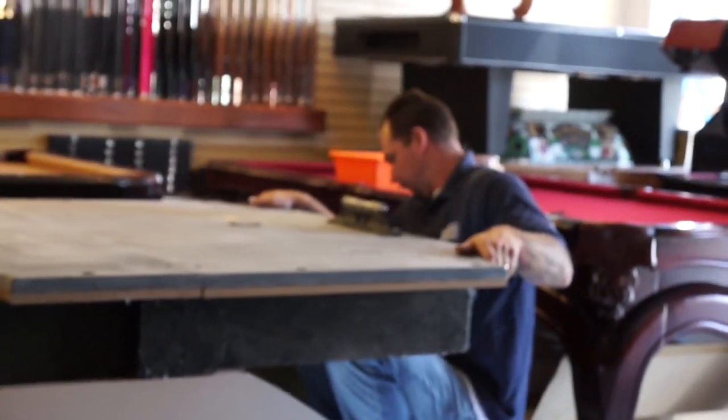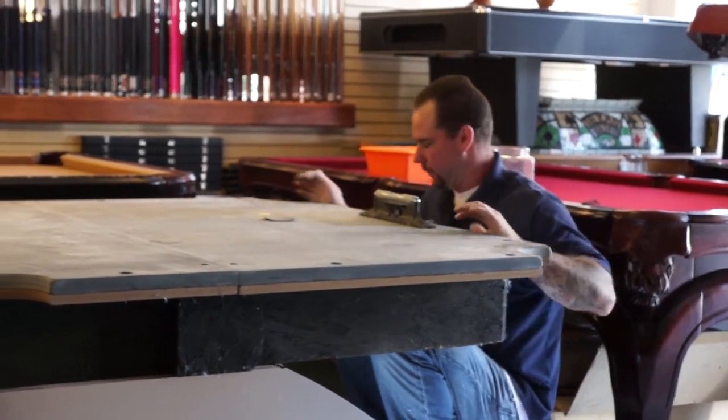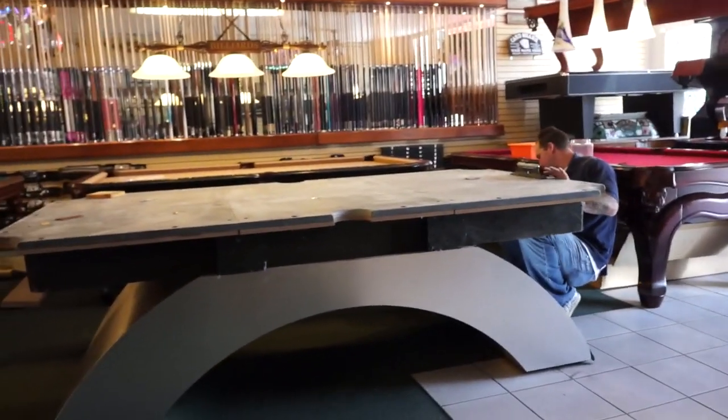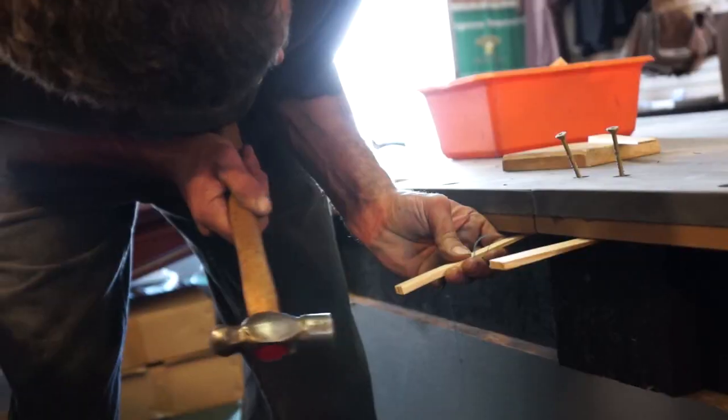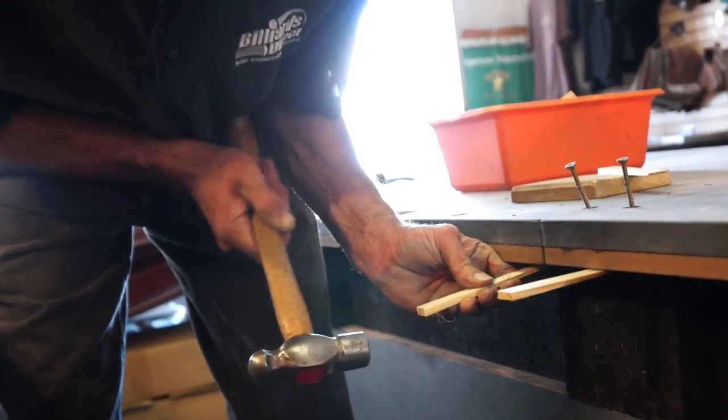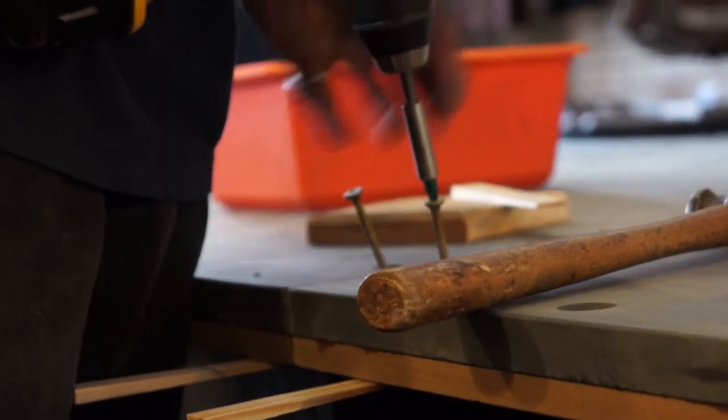Next, they lift the slate to level the sides out of the center slate's level. Once it is in place and leveled out properly, they drill it and secure it so that it cannot move or shift.